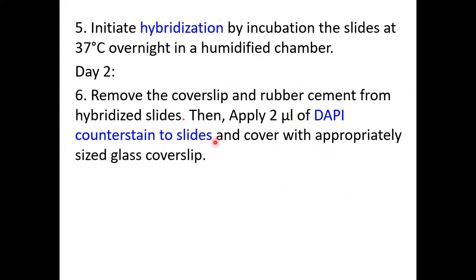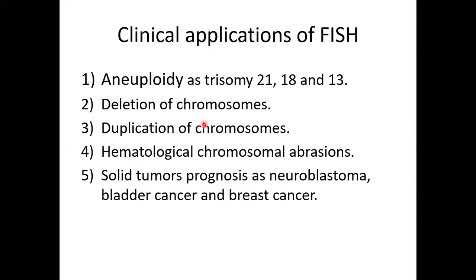FISH applications focus on chromosomal diseases such as aneuploidies — trisomy 21, trisomy 18, trisomy 13 — as well as deletions of chromosomes, duplications of chromosomes, and hematological chromosomal aberrations. We also use it for prognosis of solid tumors such as neuroblastoma, bladder cancer, and breast cancer. Overall, FISH is most suitable for chromosomal abnormalities.